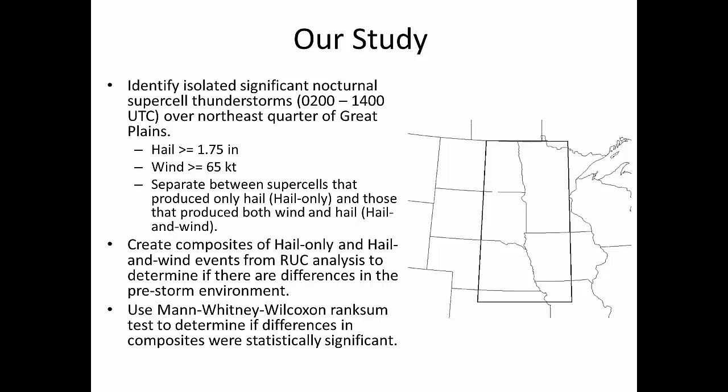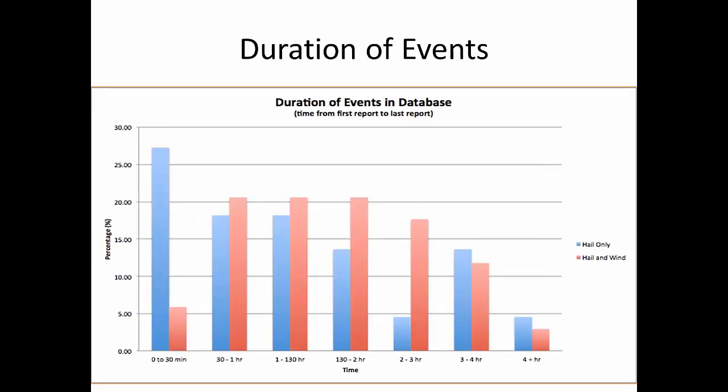We then created system-relative composites using RUC analysis data to determine if there were differences in the pre-storm environment that could help determine if the nocturnal supercell was going to be capable of producing both wind and hail, or if it was just mainly a hail threat. We used the Mann-Whitney-Wilcoxon rank-sum test to determine if these differences in the composites were statistically significant. Our general study area encompassed the eastern part of the central and northern plains.